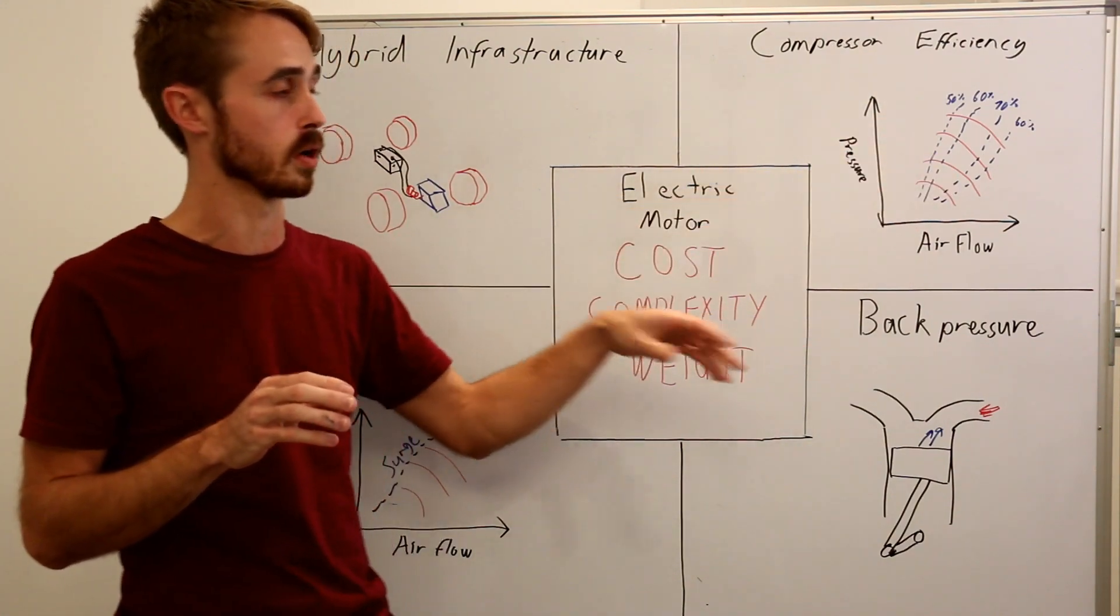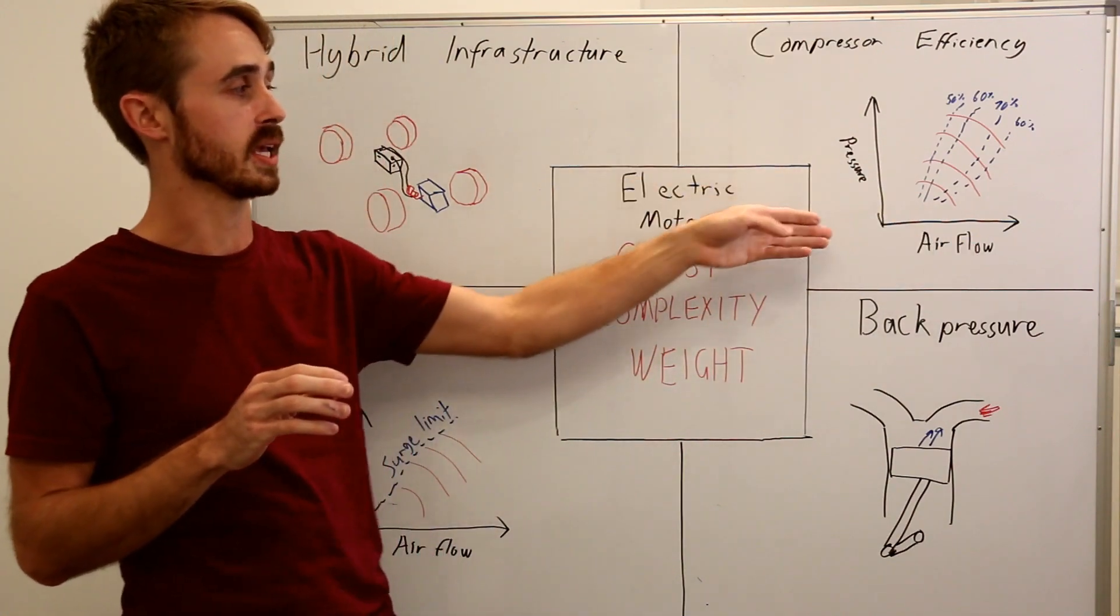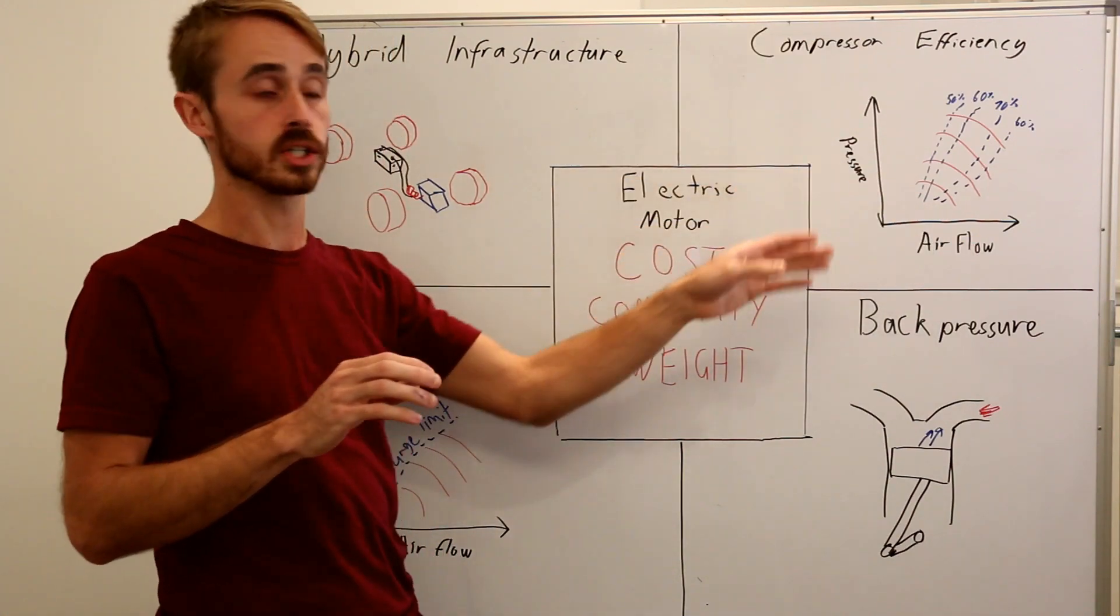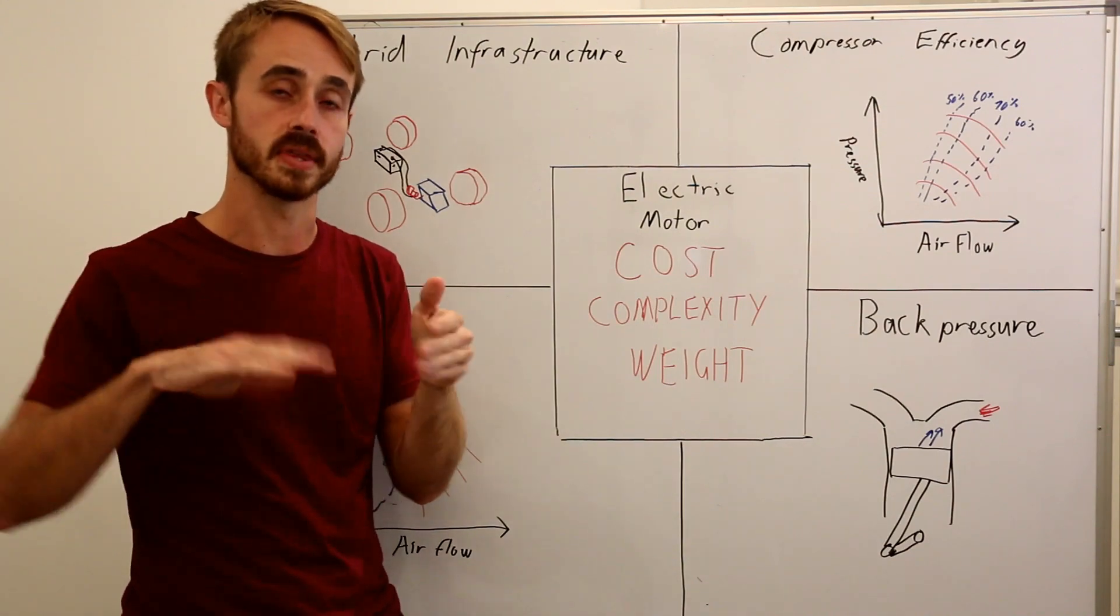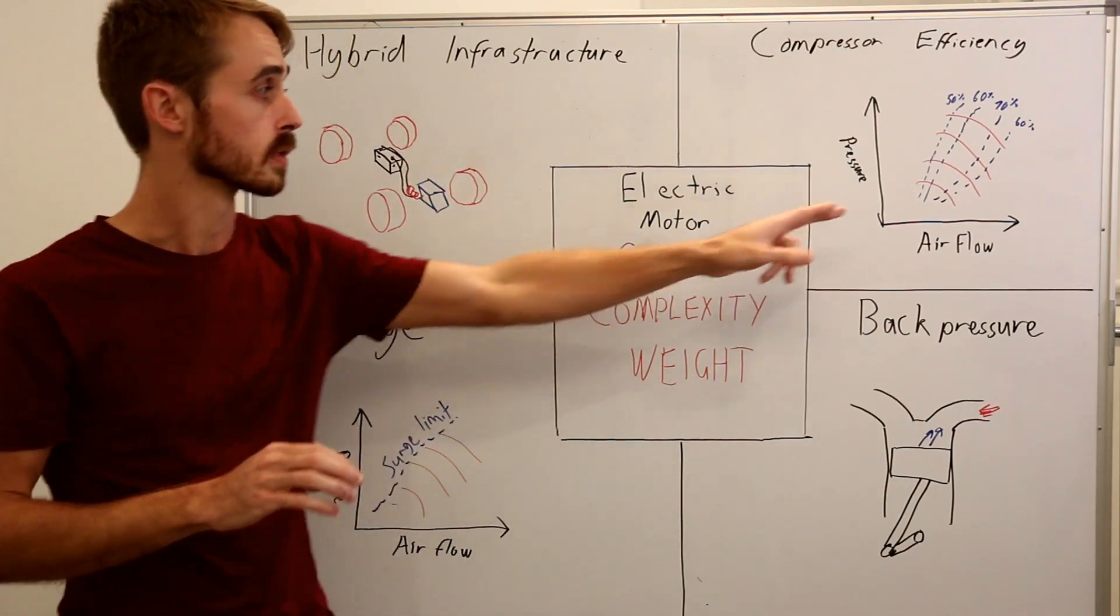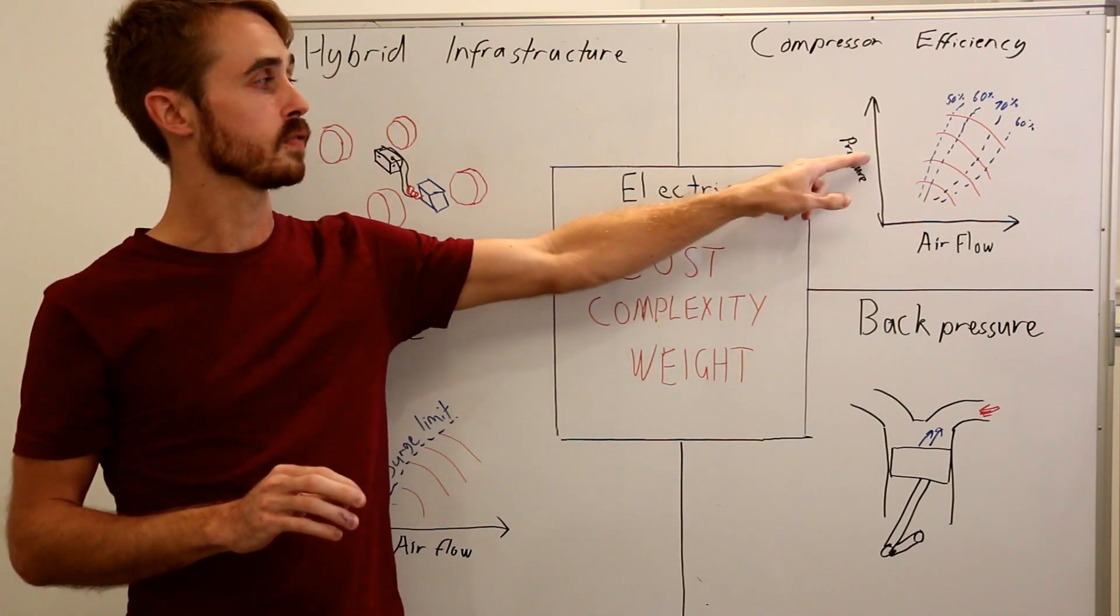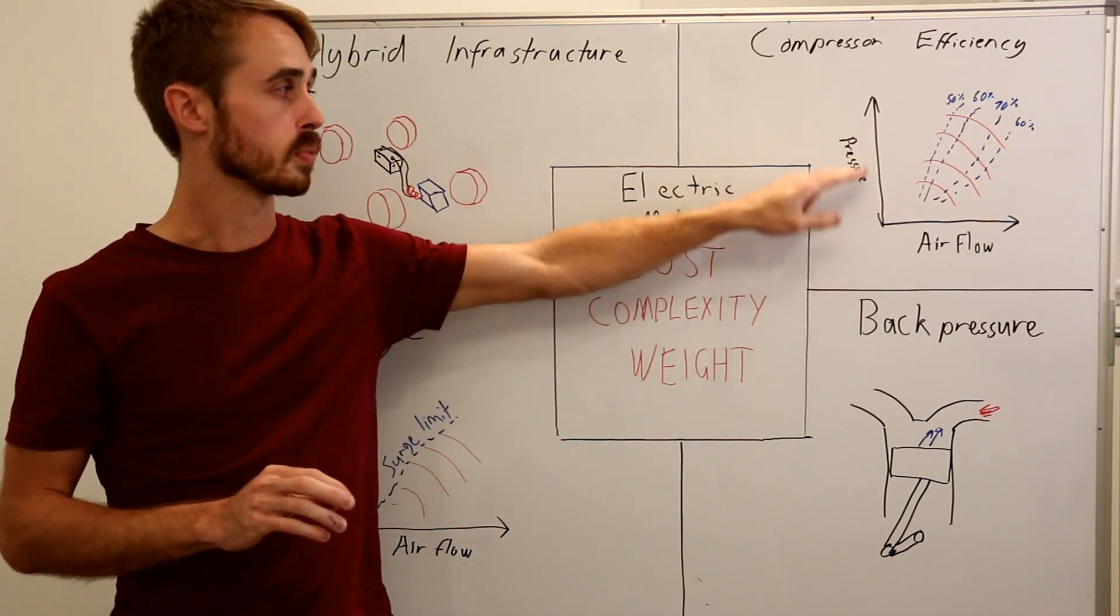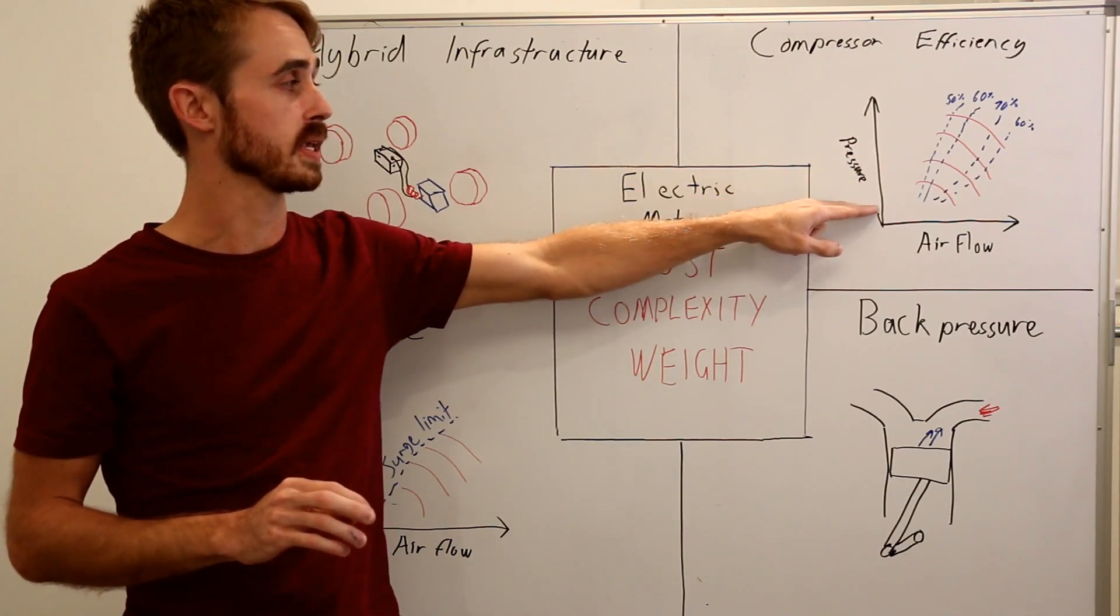Now this is an example compressor curves or an example compressor map. So this is airflow on the bottom and pressure here. And this is the pressure ratio. And if you imagine airflow is roughly consistent with the RPM that your engine is doing, you can see that at low RPM we're on this side of the map. And if we try to maintain the same boost, pressure ratio is basically our boost. So we can see low boost condition is here,